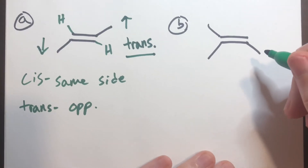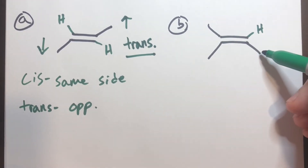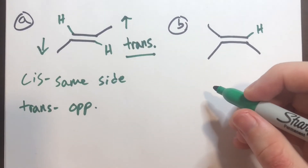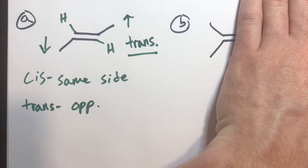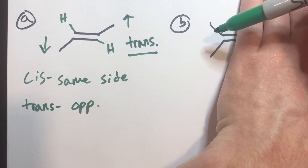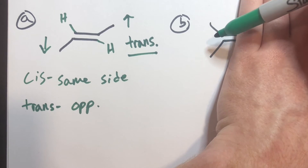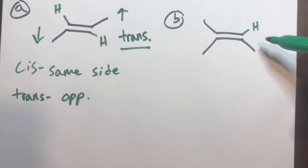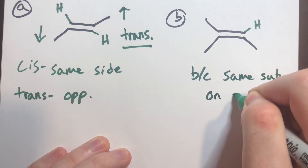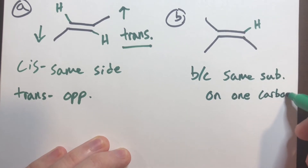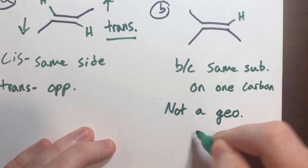For molecule B, cis and trans doesn't work because we have two methyl groups on one carbon and a methyl group plus a hydrogen on the other — they are not substituted in the same way. If we try to compare priority on the left side, we see two methyl groups, which are identical — just like in chirality, we cannot distinguish between them in terms of priority. If we interchange those methyl groups, it would not change the molecule at all. So it is neither cis nor trans; it is not a geometric isomer.